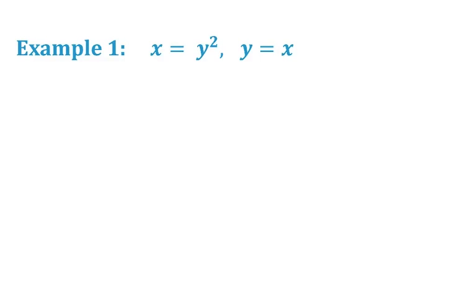So to find the intersection algebraically, we notice that if x is equal to y squared and if y is equal to x, then it must be true that y squared is equal to y, since both of those equations are the same as x.